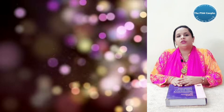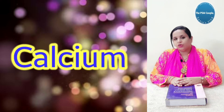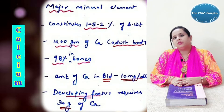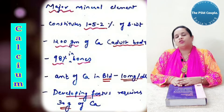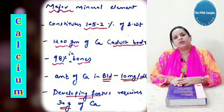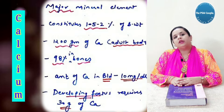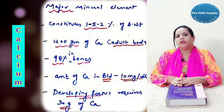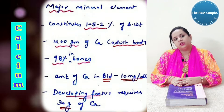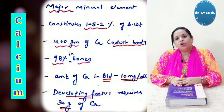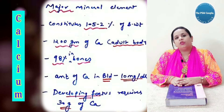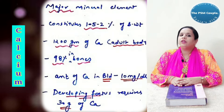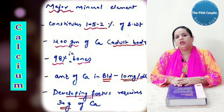The first element we are going to discuss is calcium. Calcium is the major mineral element. It constitutes 1.5 to 2% of the body weight. An adult body contains 1200 grams of calcium, and 98% of it is present in the bones. The amount of calcium in the blood is 10 milligram per deciliter. The developing fetus requires 30 grams of calcium.